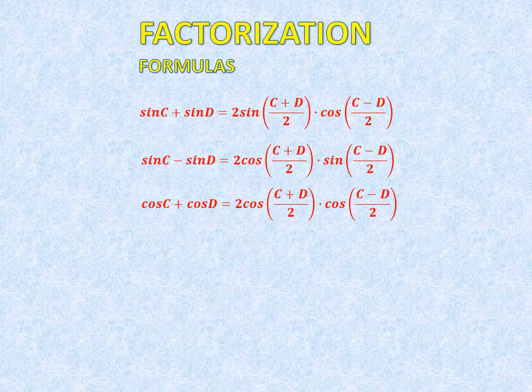Cos C plus cos D is equal to 2 cos((C plus D) upon 2) into cos((C minus D) upon 2).